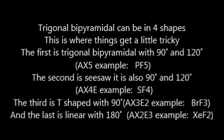Trigonal bipyramidal can be in four shapes — this is where things get a little tricky. The first is trigonal bipyramidal, with 90 degrees and 120 degrees. The second is seesaw, also 90 degrees and 120 degrees. The third is T-shaped with 90 degrees, and the last is linear with 180 degrees.